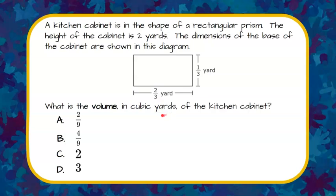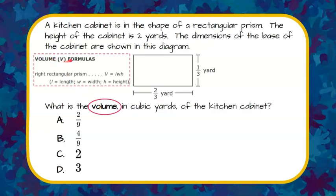So the first thing I'm going to do is go to my state reference sheet to find the formula for volume. Volume formulas right here, rectangular prism.